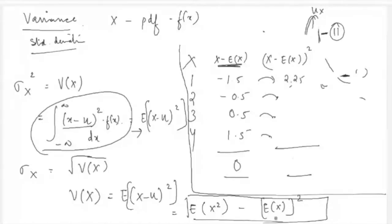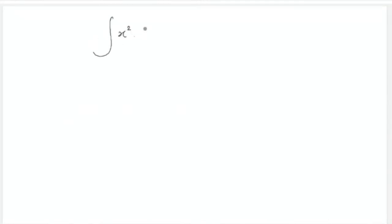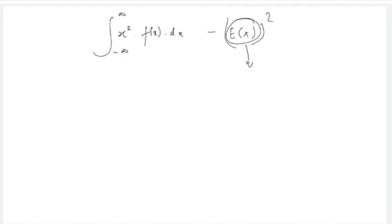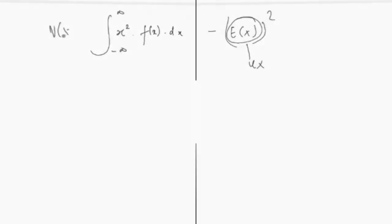For the distribution f(x) = (3/2)(1 − x²), the expected value E[X] was calculated as 3/8. To find variance, first calculate E[X²] = integral of x²·(3/2)(1 − x²) from 0 to 1.